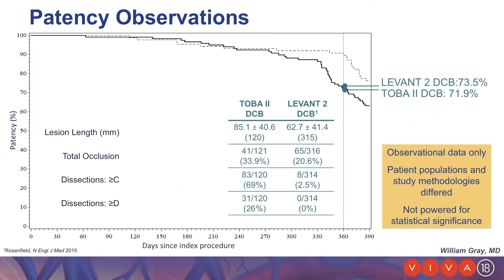Looking at the DCB arm of TOBA versus the DCB arm of Levant II: the DCB group in TOBA had a longer lesion by about 2 centimeters, more CTOs, and by definition more dissection than the Levant II DCB arm, therefore representing a much more complex group of patients. And even in this more complex group, patency between the two groups was similar.